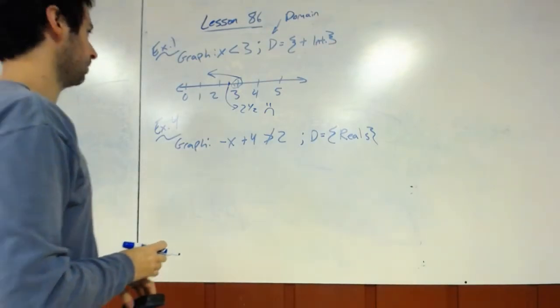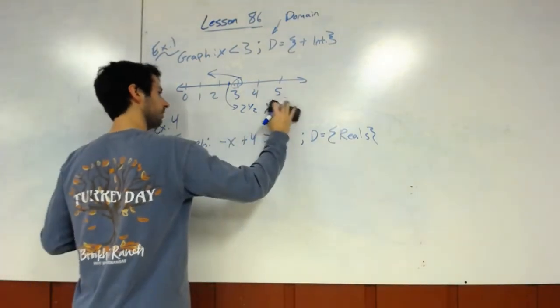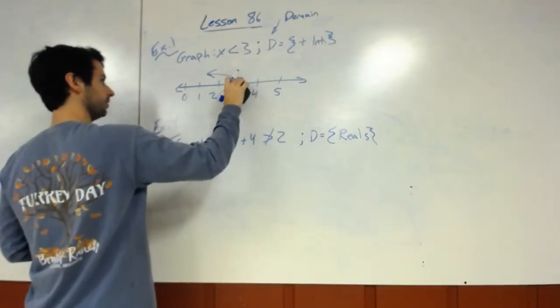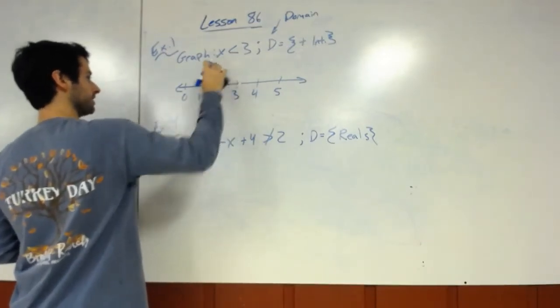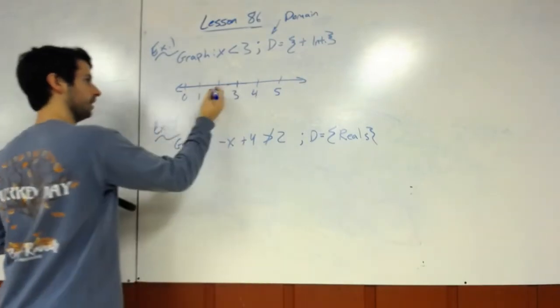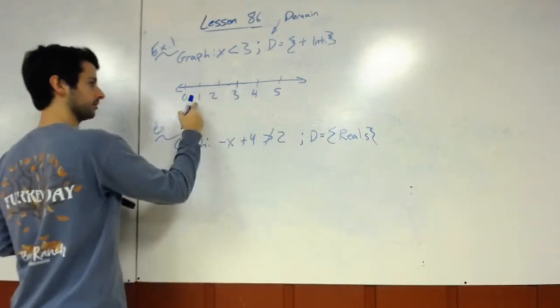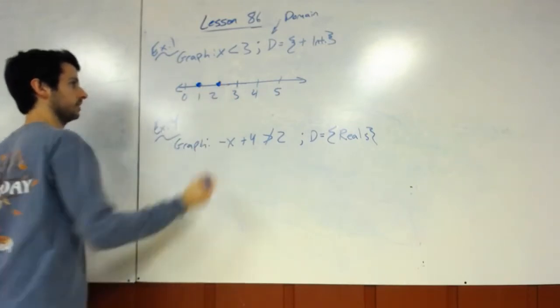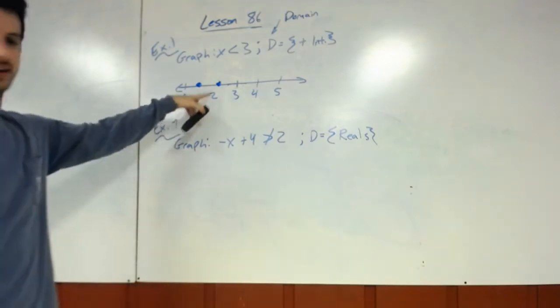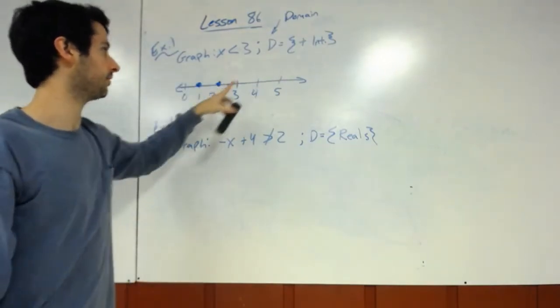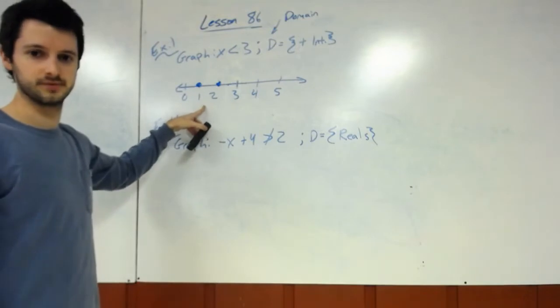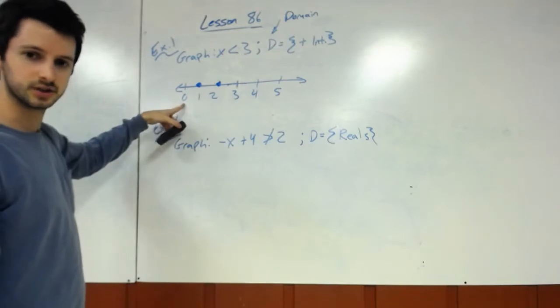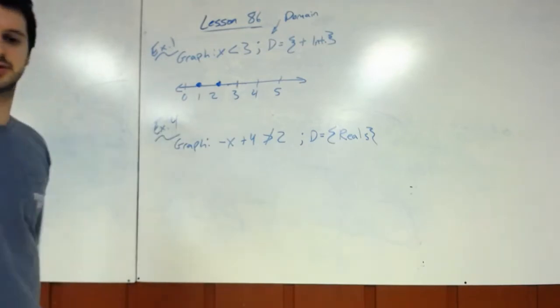So, therefore, we cannot just do an open circle and shade to the left. What we have to do, and since we're only doing positive integers, well, the only 2 that are less than 3, positive greater than 0 would be 1 and 2. So this would be the graphing of x is less than 3 with the domain of only positive integers. It's less than 3, so 3 doesn't count. 0 is not an integer. And then negative numbers don't count. So 1 and 2, those are my only solutions.